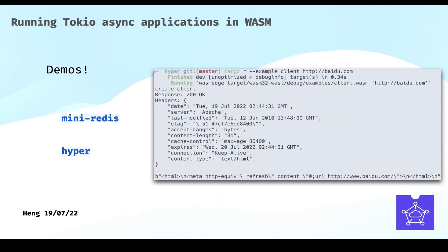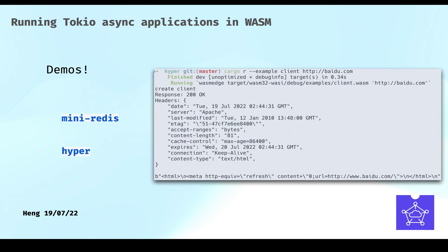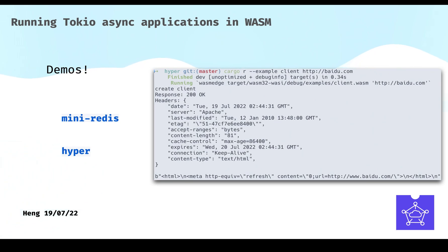I will show you two demos of using Tokio in WebAssembly. One is MiniRedis, which is an educational project by Tokio, and the other is Hyper, which is a HTTP library in the Tokio ecosystem. Since we don't have enough time to run the demos, I will just attach a screenshot of running Hyper. We first compile the source code to WebAssembly, then use WasmEdge to execute it, and then we get the response from the website.